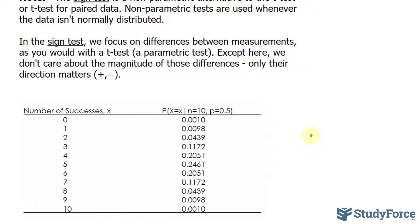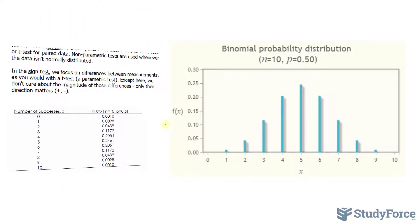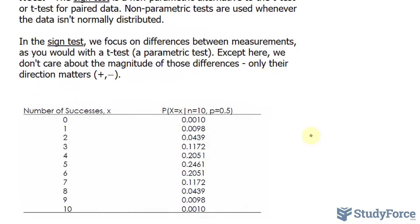Now, since we ended up with 7 plus signs, the question of interest is, how likely is it to observe as many as 7 or more successes out of 10 when the probability of success is 0.5? What we will do is write down P(X ≥ 7) = P(X = 7) + P(X = 8) + P(X = 9) + P(X = 10).